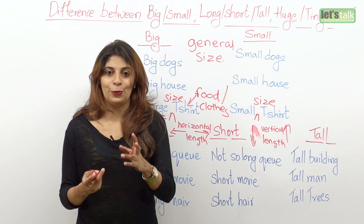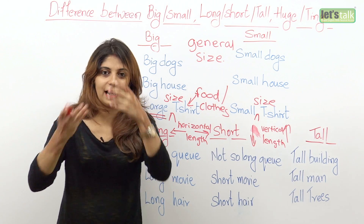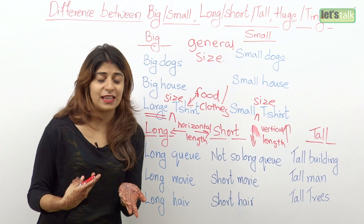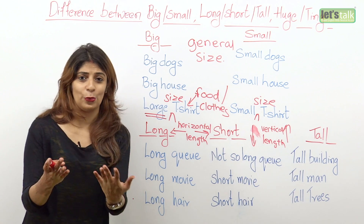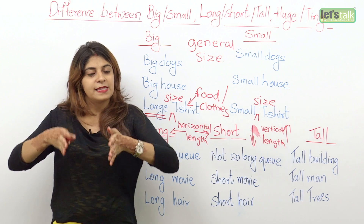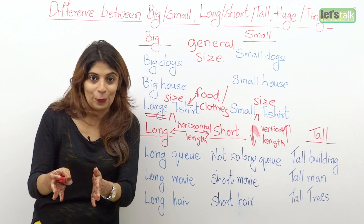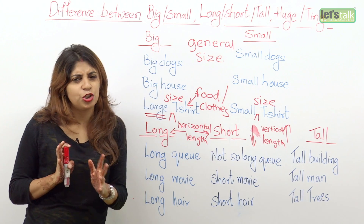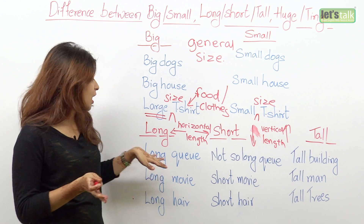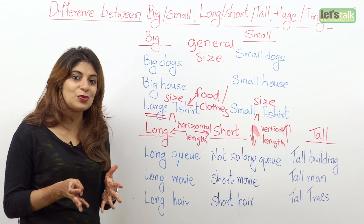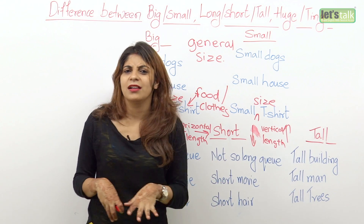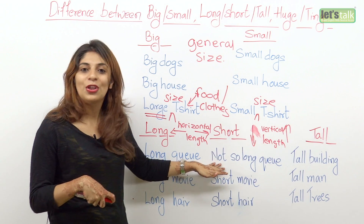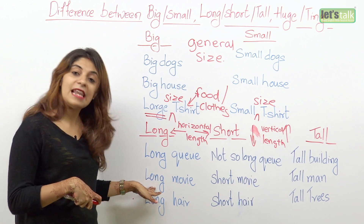So we have a long queue. A queue is a line — for example, you go to a movie theatre and you see there's a long line, a long queue. It's a horizontal queue with too many people standing in a line. You would not say it's a short queue; instead you turn long into its negative and say the queue is not so long — I think we can wait.